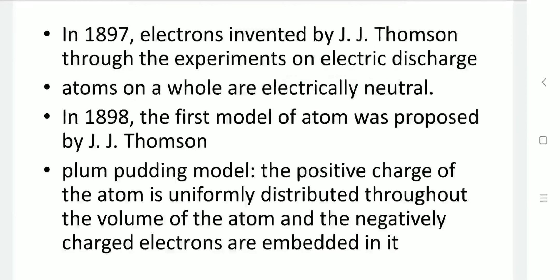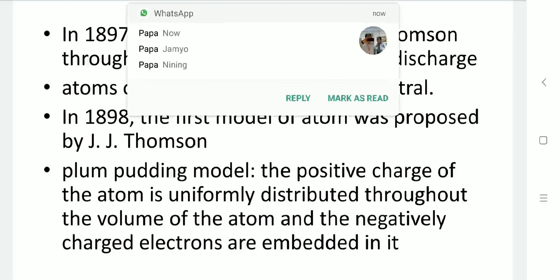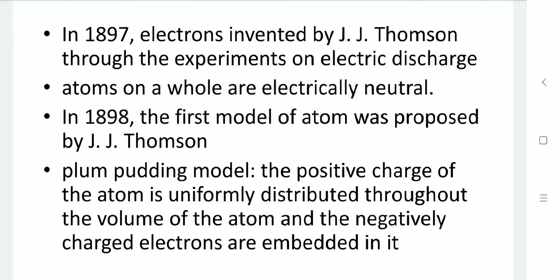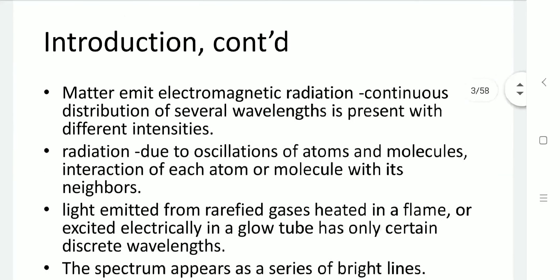The atom is electrically neutral as the number of negative charges are balanced by the number of positive charges. The first atomic model was proposed by J.J. Thomson himself in 1898, known as the Plum Pudding Model. In that model, he defined that all the positive charge carriers are uniformly distributed throughout the volume of the atom, and negative charge carriers are embedded with it.